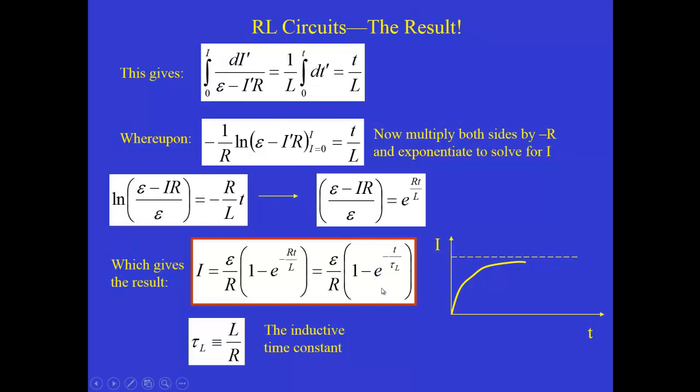And if you look carefully at this expression for the current as a function of time, at short times, e to the zero is one. So one minus one is zero. So when we close the switch, initially there's no current. But the current ramps up really quickly. But it reaches its final value only as the time gets really large. So when t gets really large, this exponential term gets very close to zero. And the current then approaches the limiting value of epsilon over R, which is the dotted line.